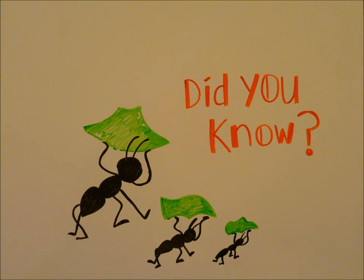Did you know worker ants — the ones who carry the leaves — have the equivalent strength of a human carrying up to 660 pounds at a 4-minute-a-mile pace?